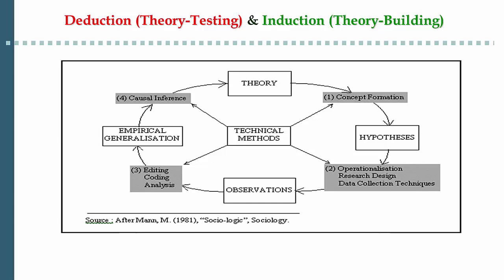In this continuum, theory building through the induction approach can be seen as the first stage of developing good explanations about the world. Such explanations and theories developed inductively out of systematic empirical research — usually referred to as post-factum or grounded theories — are based on observation and experience. They are not simply armchair speculations about the world; they are based on empirical evidence, starting with observations, through research processes, and generating a theory.